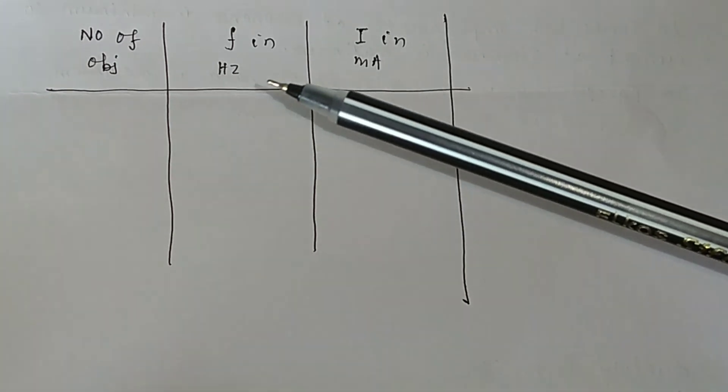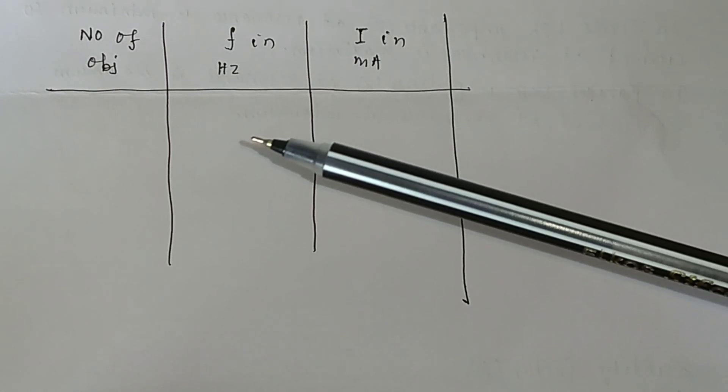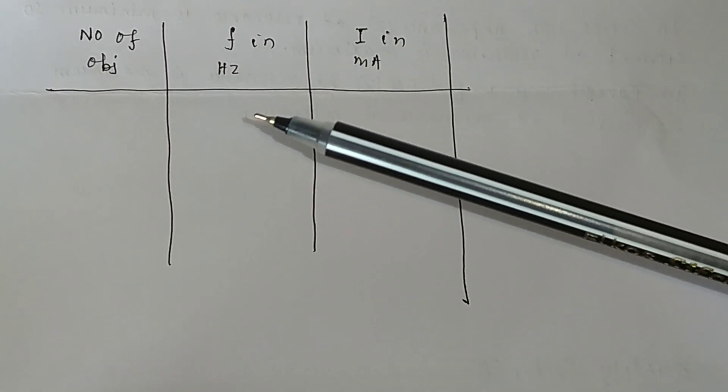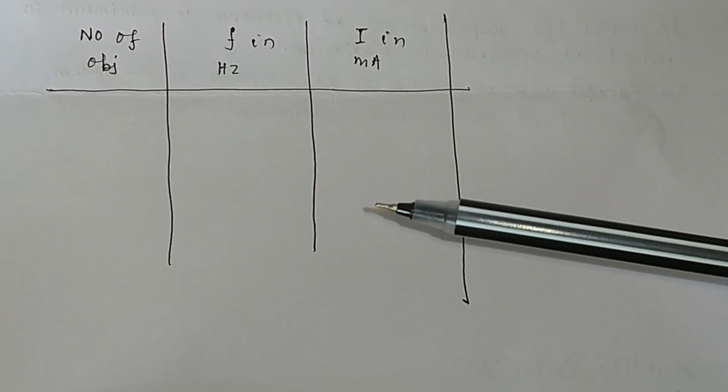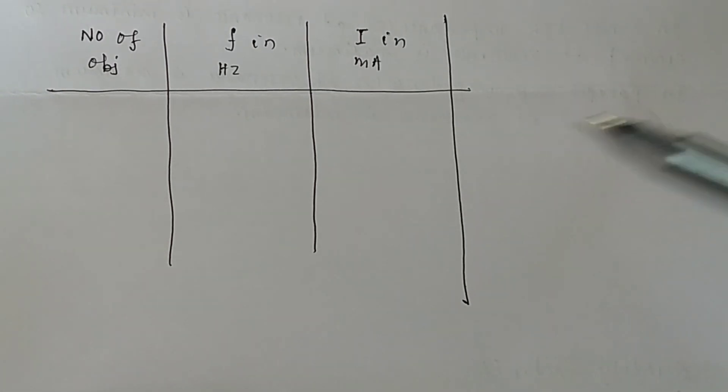You draw a table with columns for observation number, frequency in hertz, and current in milliamperes. In the experiment, you take different values of frequency and the corresponding current values, then plot a graph. The nature of the graph will be as we discussed.